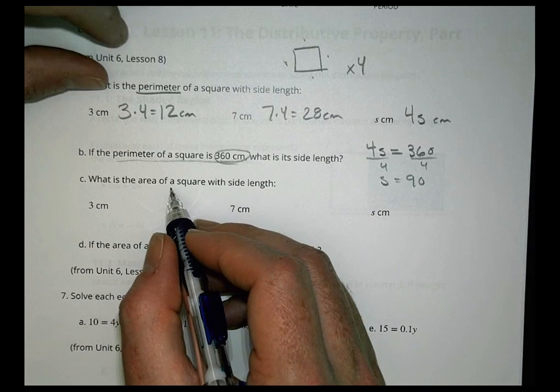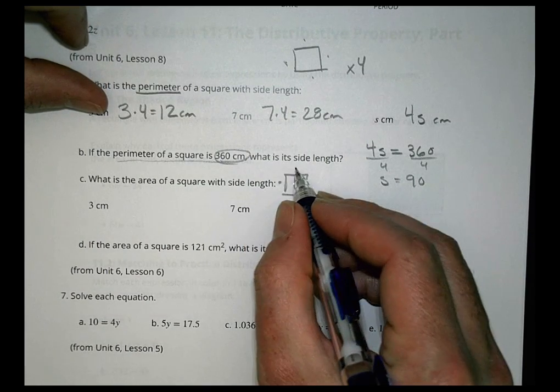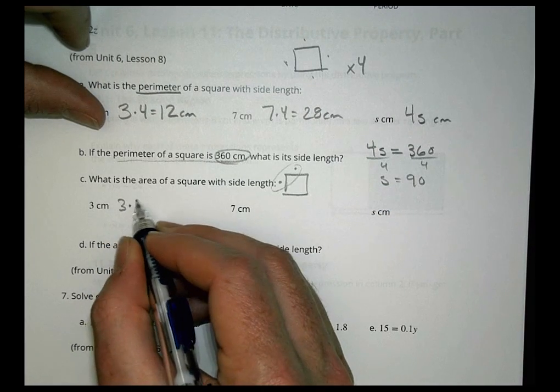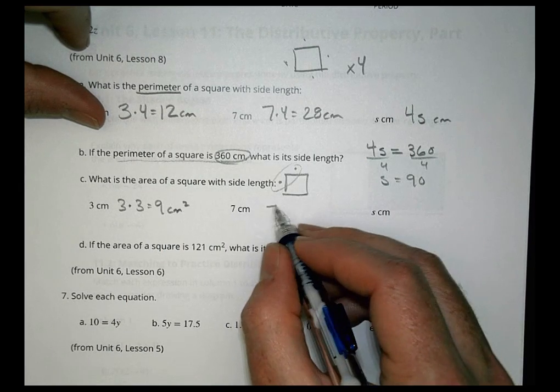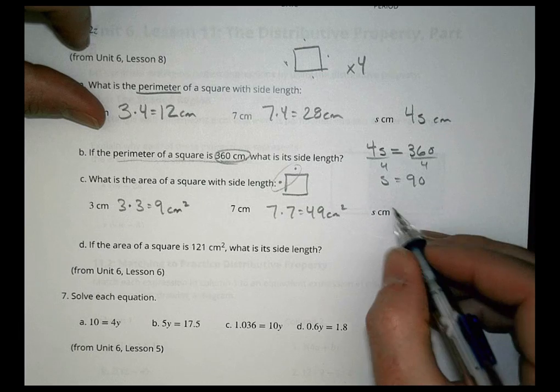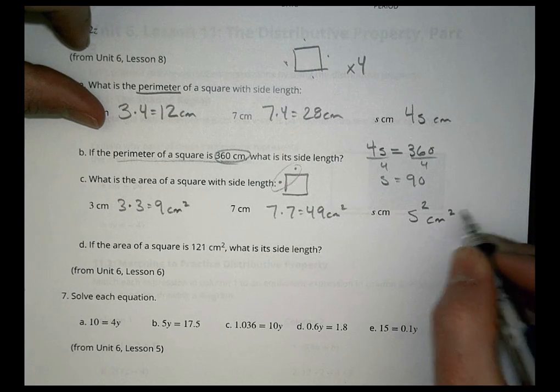What's the area of a square with these side lengths? For the area, it's the length times the width. We multiply those together. 3 times 3 is 9 centimeters squared. 7 times 7 is 49 centimeters squared. And s times s is s squared centimeters squared.